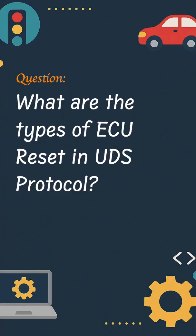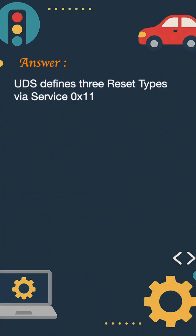What are the types of ECU resets in UDS protocol? UDS defines three reset types via service 11.